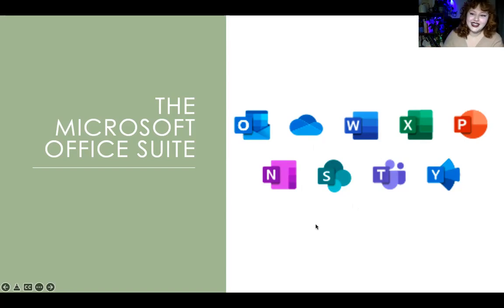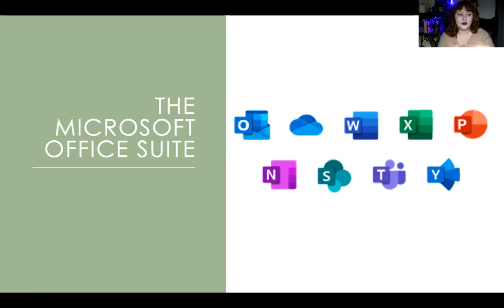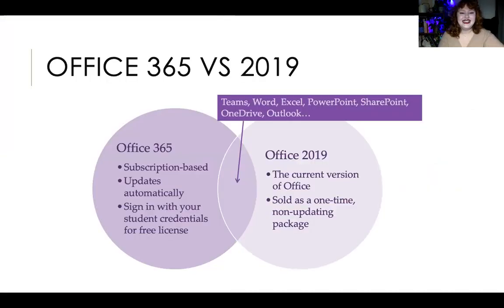Other suites you could think of include the Adobe suite, which has Photoshop, InDesign, and all those industry-standard tools for design. The Microsoft suite is the industry standard for productivity — working in offices and making stuff. So what is Office 365 and what is Office 2019?